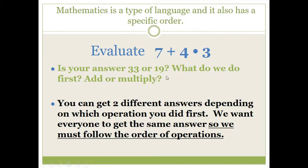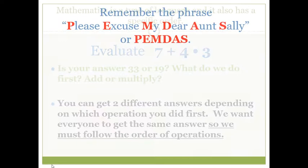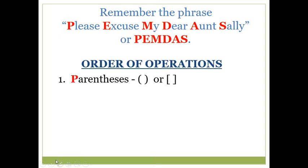Do we get 33 or 19? In order to make it so that everyone gets the same answer, a long time ago somebody decided that we need a standard order that everyone follows so we end up with the same answer. That's when the order of operations was invented. They came up with the order of operations, which we remember using the acronym PEMDAS, or 'Please Excuse My Dear Aunt Sally,' to help us remember the order.